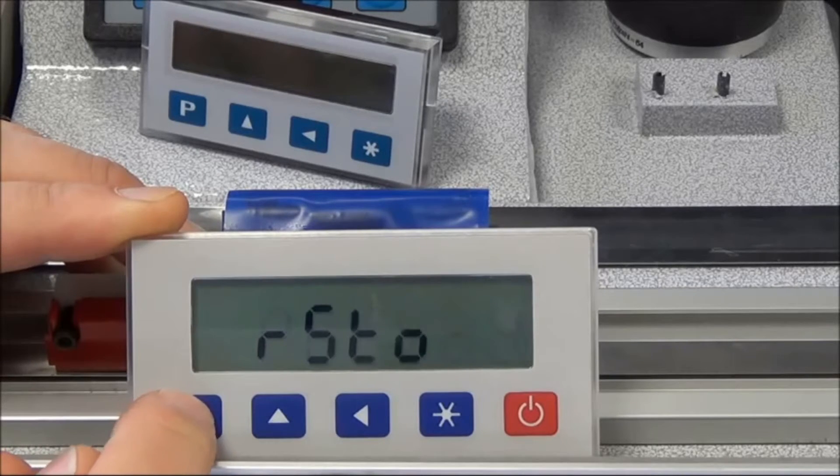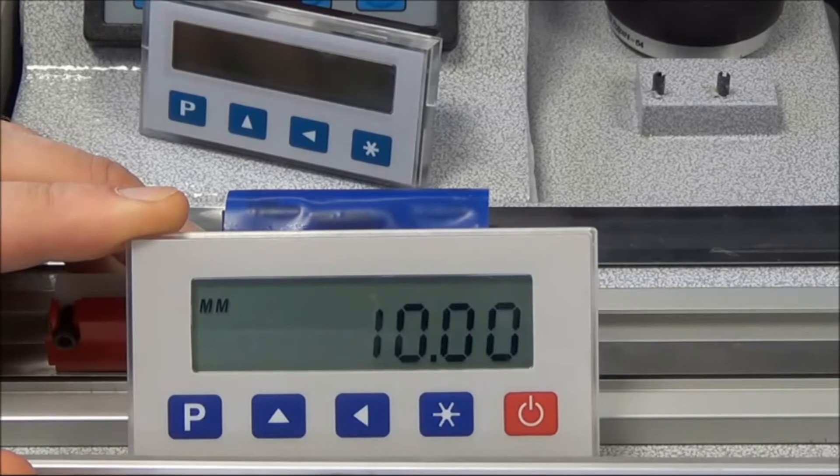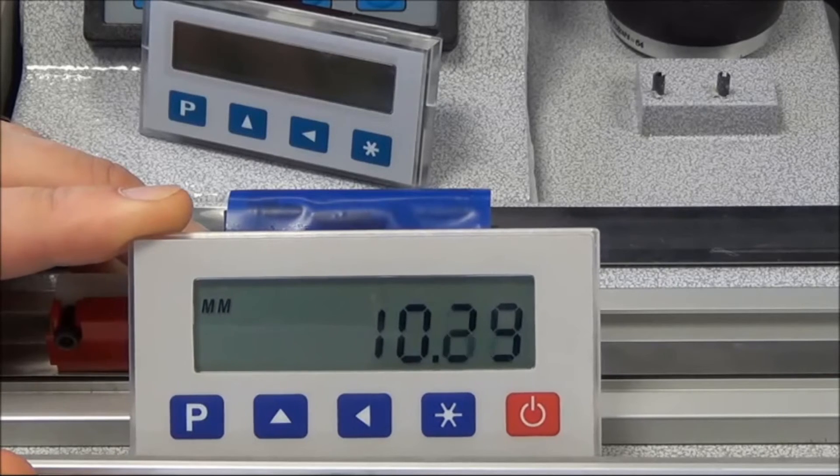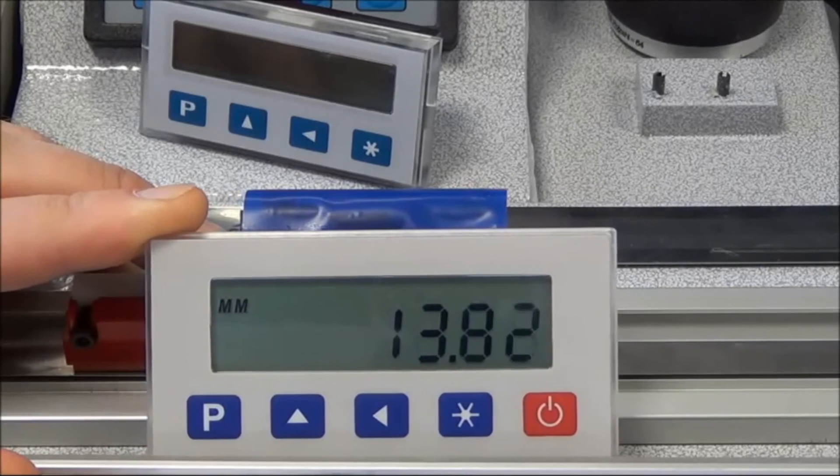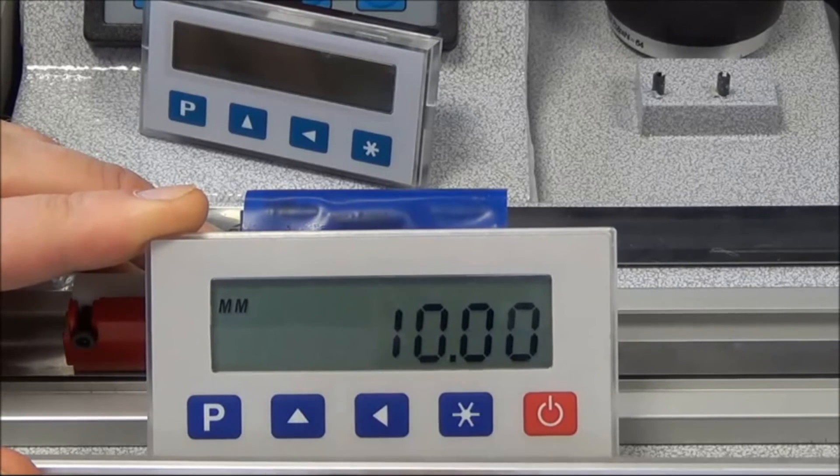We will see that the value has changed to 10 millimeters. You move the axis to that point, which is now at 10 millimeters, and press the star button. The axis is now datumed.